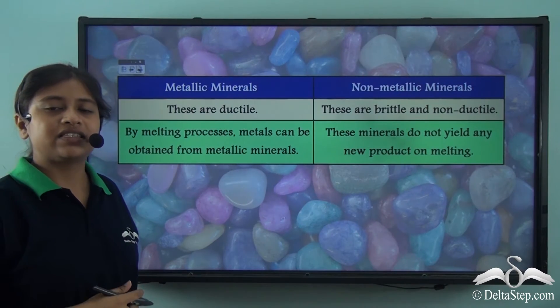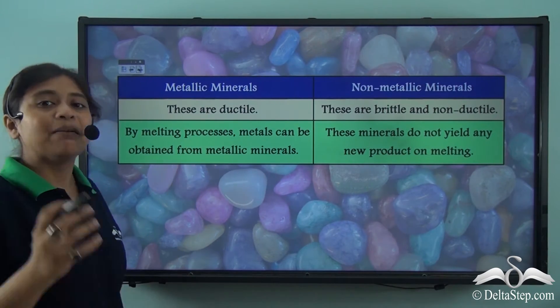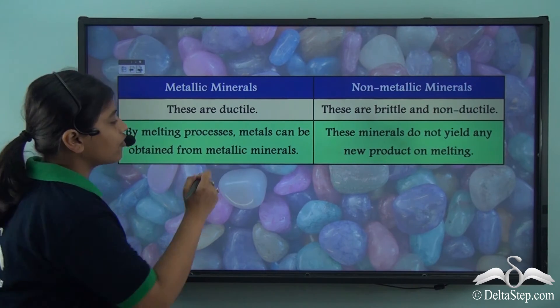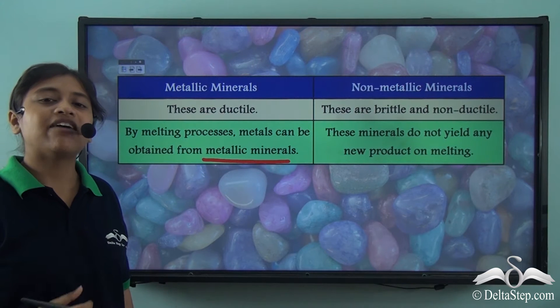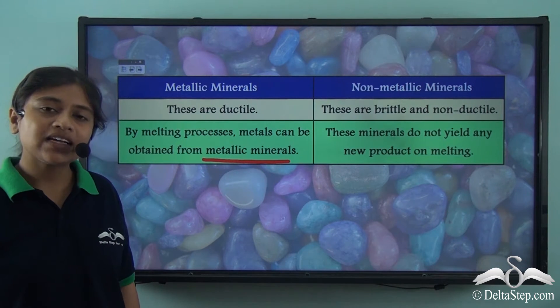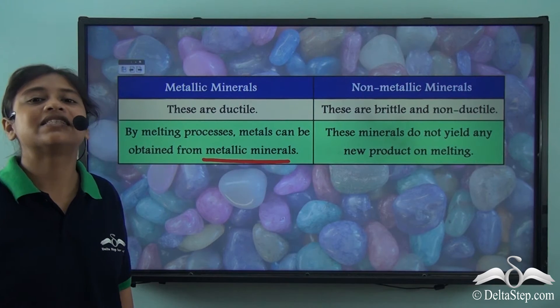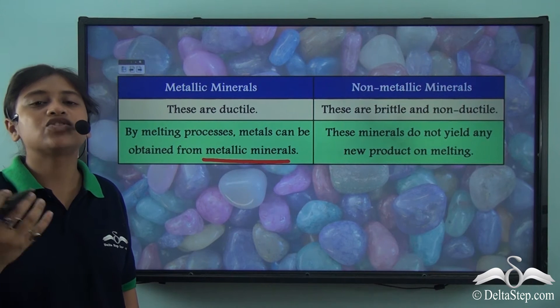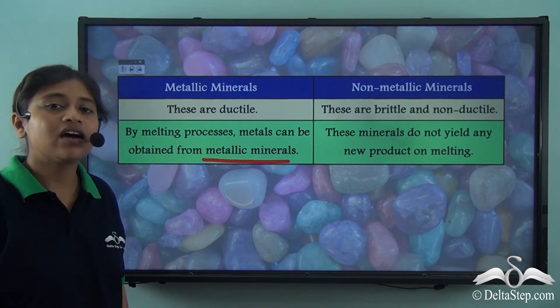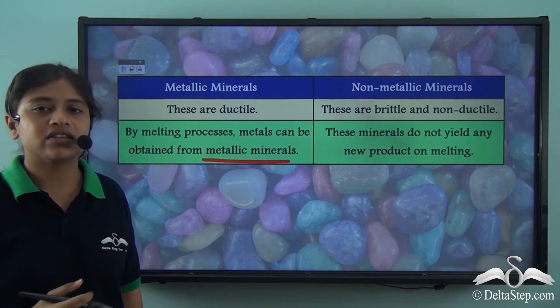The second point of difference tells us that by the melting process, metals can be obtained from metallic minerals. This means that if we have to extract gold or iron from their respective ores, we can simply melt them. By melting the ores, we can obtain the metal in pure form from these metallic minerals.